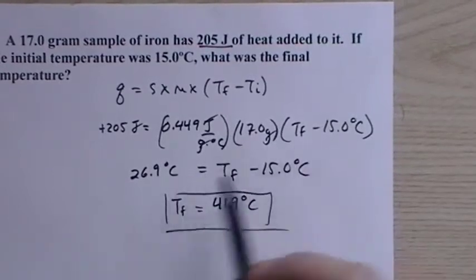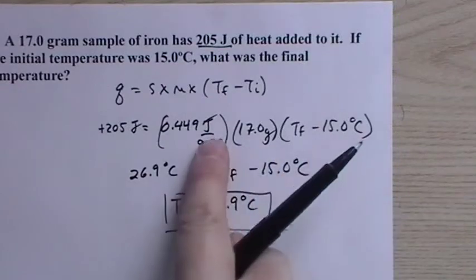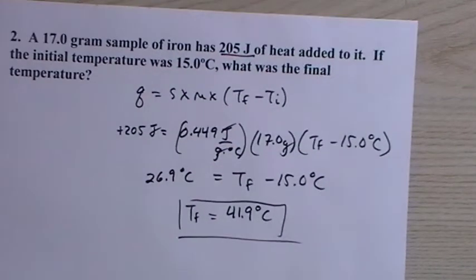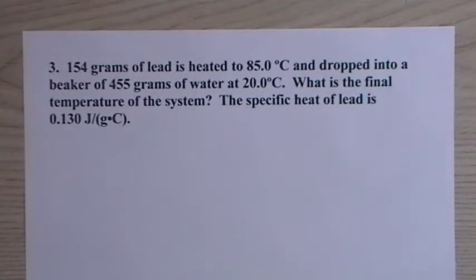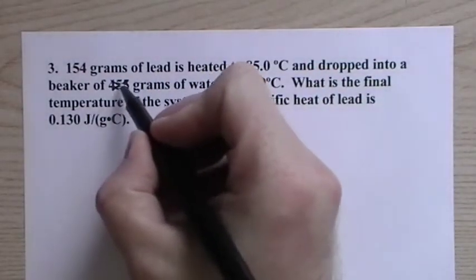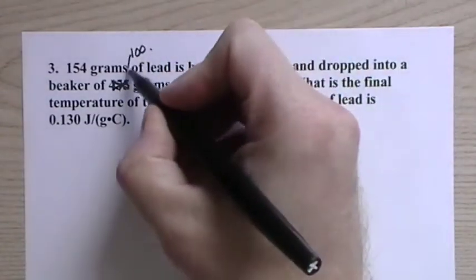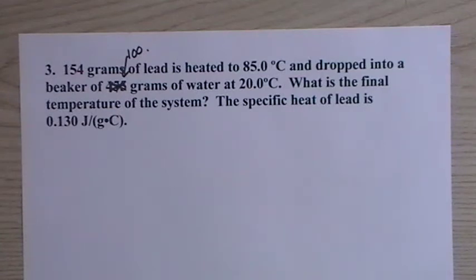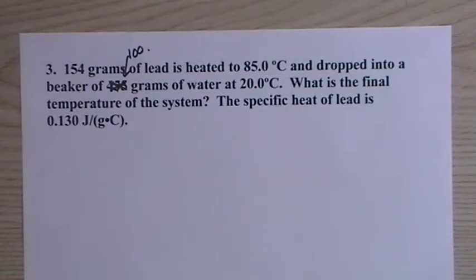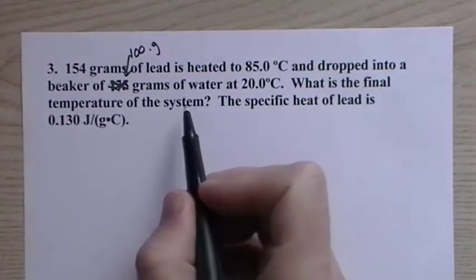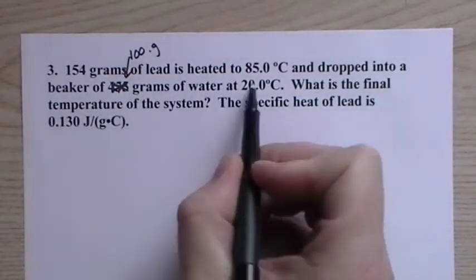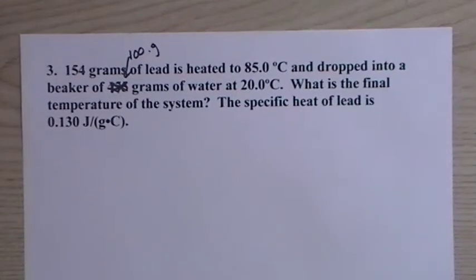So we have another problem here. We have 154 grams of lead is heated to 85 degrees Celsius and dropped in a beaker of 455 grams of water at 20 degrees Celsius. Now, I worked this out really quickly earlier and found that 455 grams of water, it's so much water that it can absorb a lot of heat from the lead and its temperature only rises a small amount, less than a degree. So let's change that to 100 grams, just so that we can see a temperature change. It's like if you were to take this piece of lead and throw it into a swimming pool, you shouldn't expect that the temperature of the pool water would rise that much.